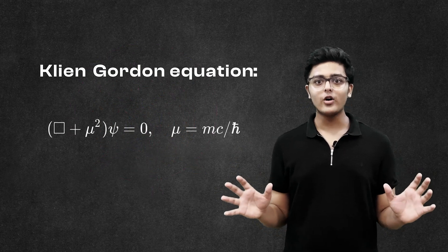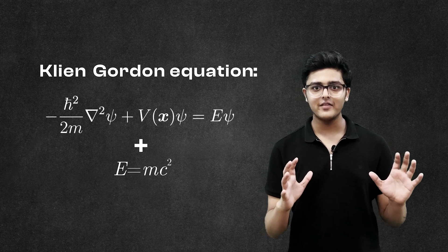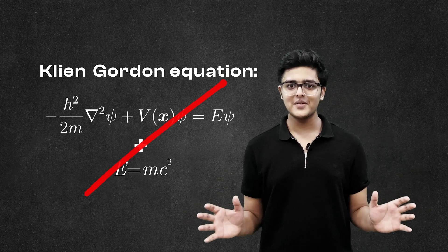Then came the Klein-Gordon equation. It was like the Schrödinger's equation but fused with the concept of relativity. Yeah, it still ignores spin. Now enter the most powerful boss.